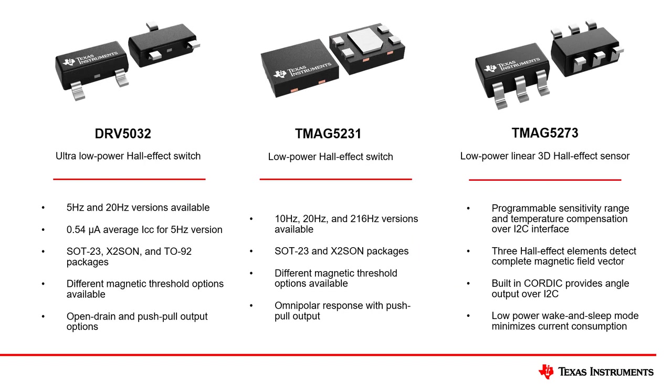The two main devices used in this example are the DRV5032 and the TMAG5273. The DRV5032 is a low power switch that comes in different options depending on the application need. Different magnetic thresholds can support different magnet strengths or placements. An alternative device to the DRV5032 is the TMAG5231. This device is also a low power Hall effect switch but has a few distinctions such as different sampling rates and magnetic thresholds.